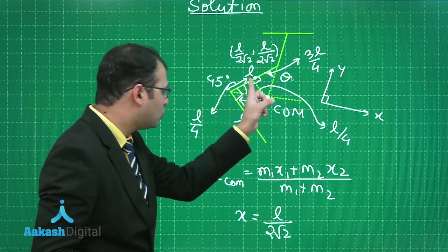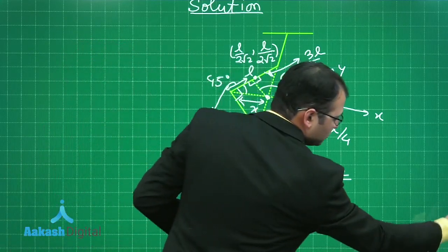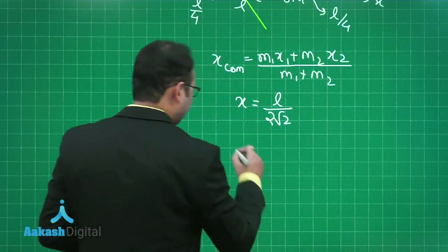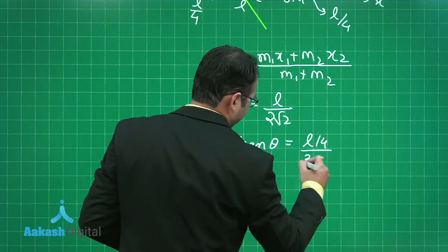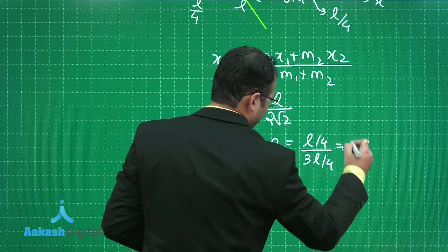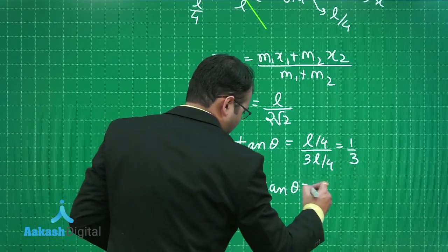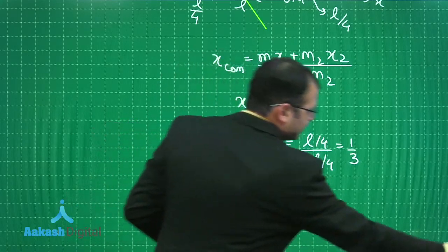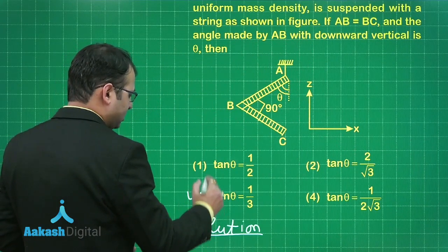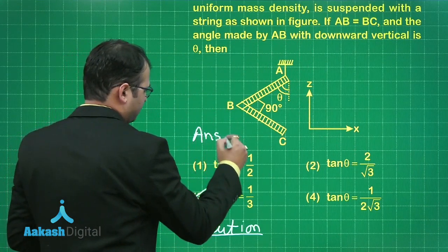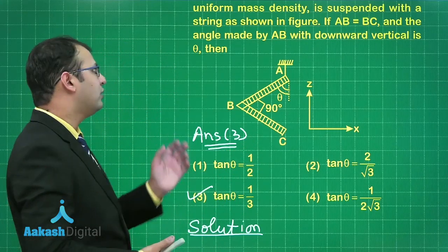This θ can be simply perpendicular by base of this portion, that is L/4 divided by 3L/4. Solving this you will get tan θ is equals to L/4 divided by 3L/4, that is equals to 1/3. So the relation we wanted to derive is this. Let's see which is the best suited option here. As per the given question, option number 3 is the best suited option for this one.